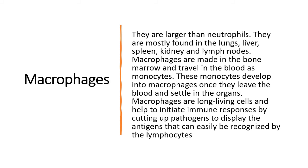The macrophages are larger than the neutrophils and make up about 40% of the phagocytes. You would mostly find them in the lungs, liver, spleen, kidney, and lymph nodes. They travel through the blood as monocytes — think of monocytes as cells that are yet to fully develop — and once released from the bone marrow, they grow into macrophages. They live very long and are able to initiate immune responses. Macrophages are more aggressive than neutrophils: they take an invasive microorganism and cut it open so that other immune cells can study it and develop a defense mechanism against it.